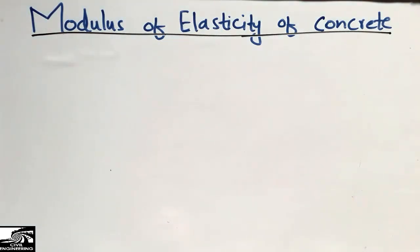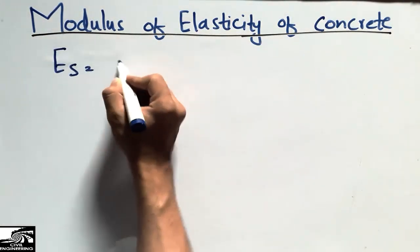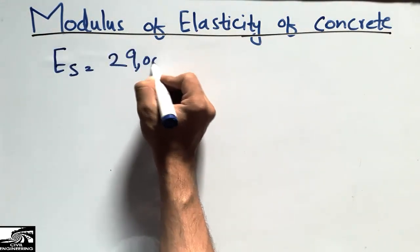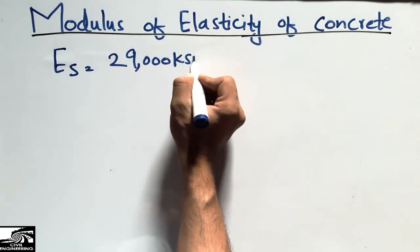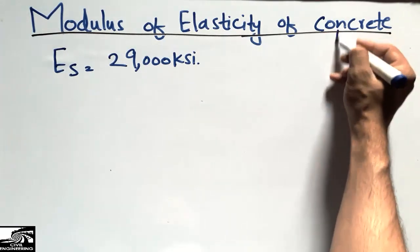As we know, the modulus of elasticity of steel is 29,000 ksi. It is a known factor for grade 40 and grade 60. But we don't know about the modulus of elasticity of concrete.